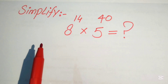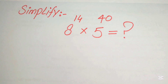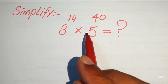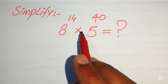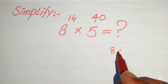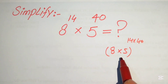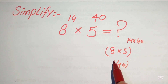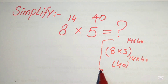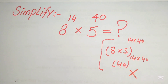Some students make a common mistake on this type of question. They just multiply the bases and multiply the exponents directly — so 8 times 5 is 40, and they multiply the exponents to get some number. This is a common mistake, but it is the wrong solution.